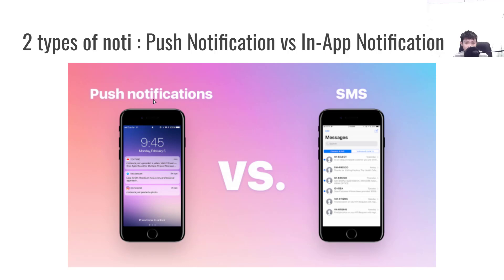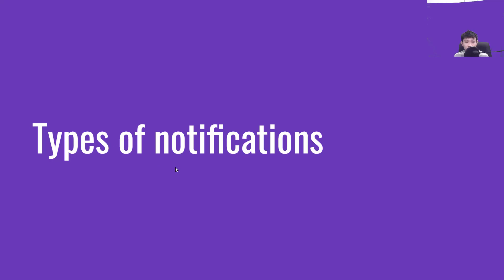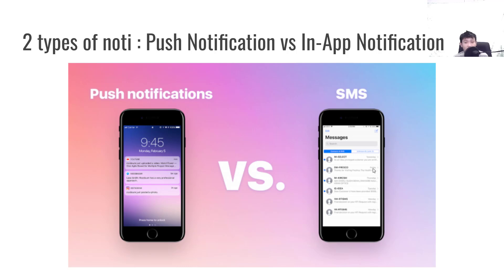The first type is push notification. Push notification means you are outside the app, but the application sends you a notification to the drawer or to the lock screen. It operates from outside the app — that is push notification.